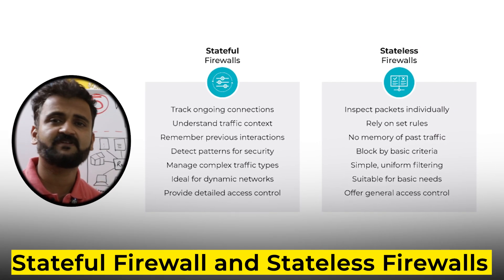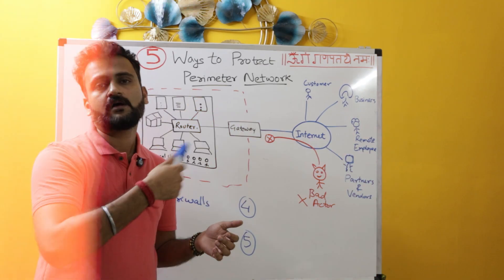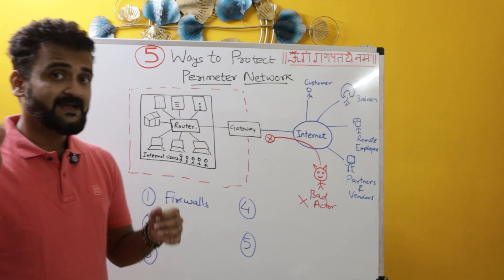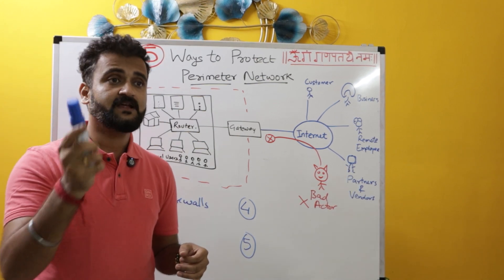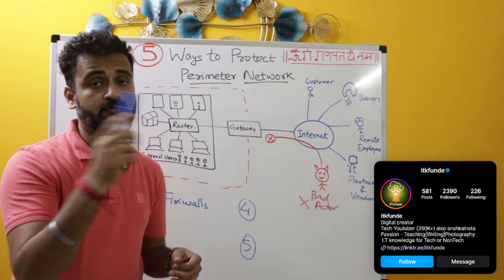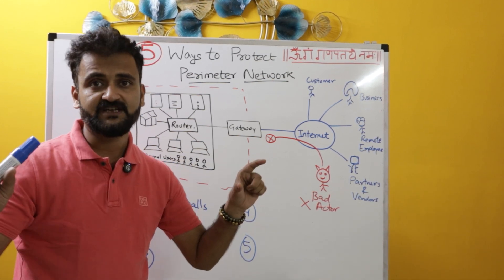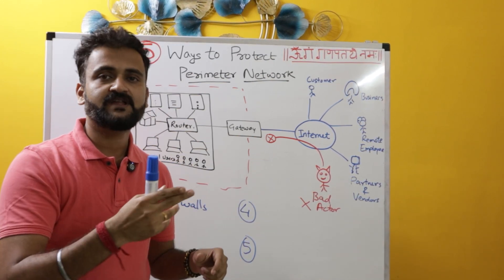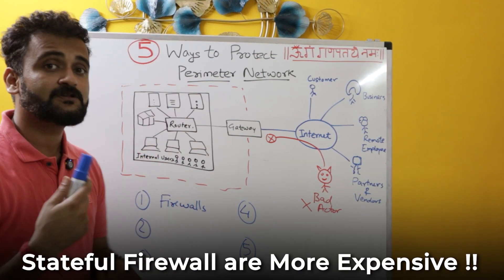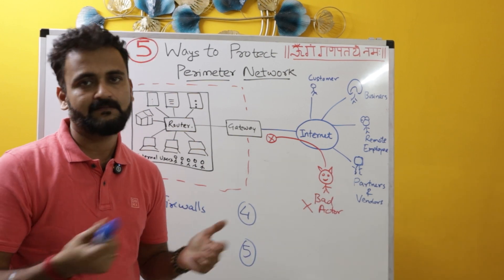There are two kinds of firewalls: stateless and stateful. A stateless firewall does not keep track of connections — it's not concerned with what is happening within those connections. A stateful firewall, however, follows the whole communication, keeps track of open connections, and cuts the connection the moment that communication is over. Stateful firewalls are more expensive while stateless ones are inexpensive.